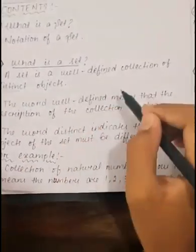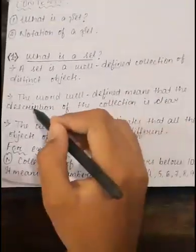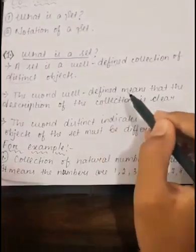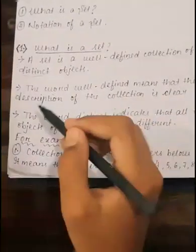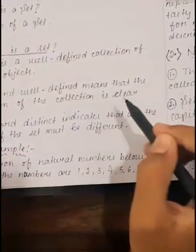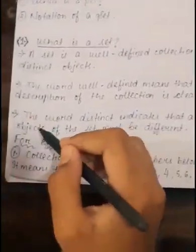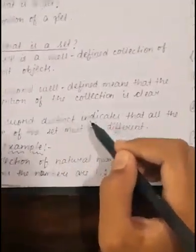The word well-defined means that the description of the collection is clear. The word distinct indicates that all the objects of the set must be different.